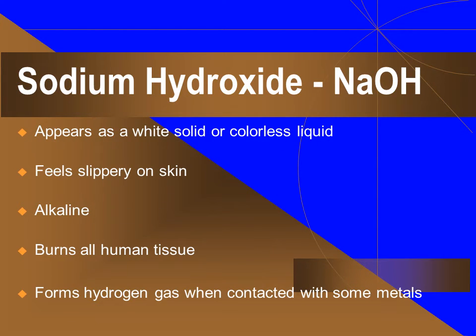Sodium hydroxide appears as a white solid or colorless liquid. It feels slippery on skin, has an alkaline high pH, and burns all human tissue upon contact. It also forms hydrogen gas when contacted with some metals.